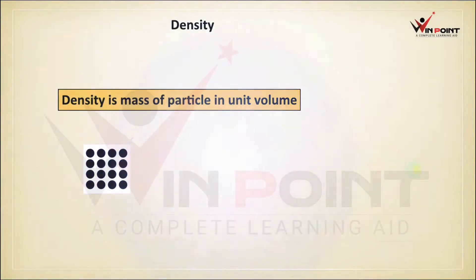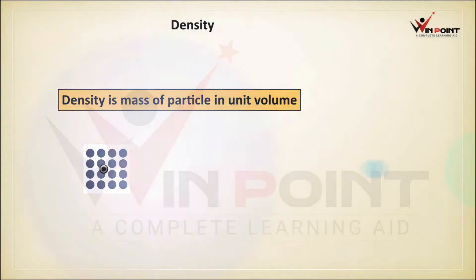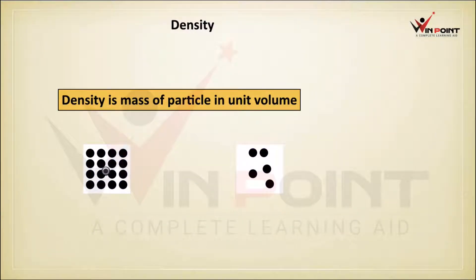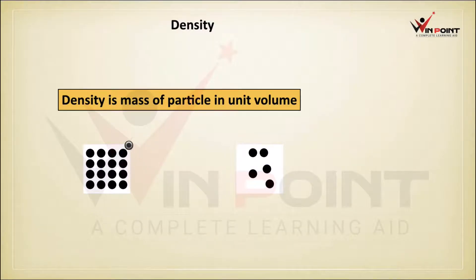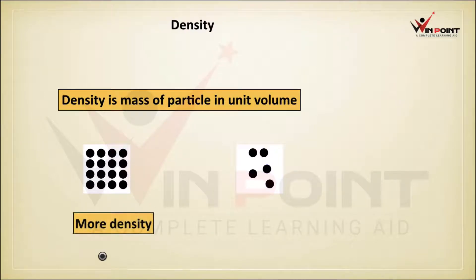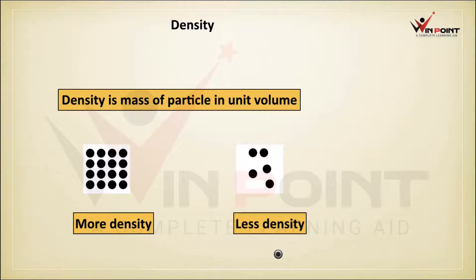Here there are two objects, number one and number two. Which one is having more density? This one is having more density because the number of particles are more. The other one is having less density.